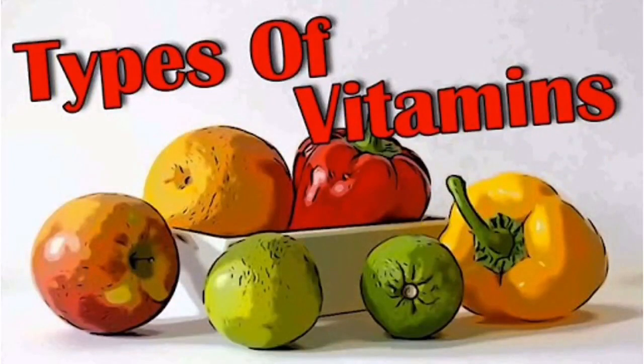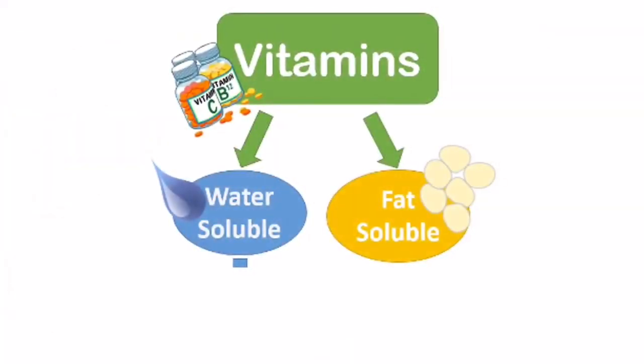Based on solubility, vitamins have been classified into two different groups: water-soluble vitamins and fat-soluble vitamins. Water-soluble vitamins are not stored in our body, as their excess gets excreted through urine. Therefore, these vitamins need to be replenished constantly. Vitamin B complex and Vitamin C are water-soluble vitamins.